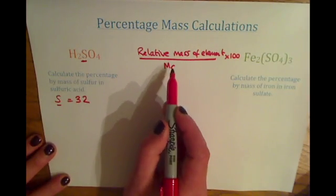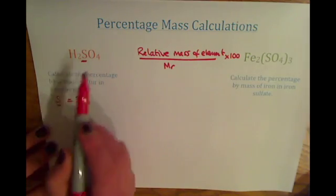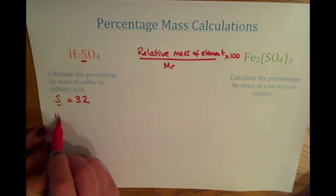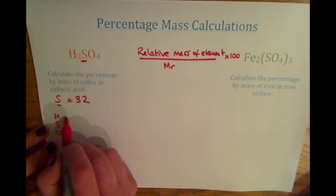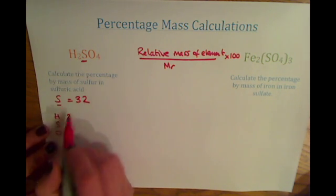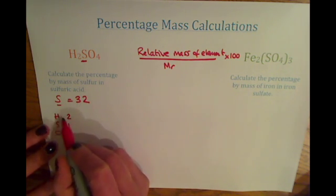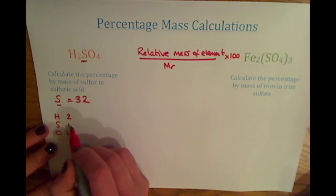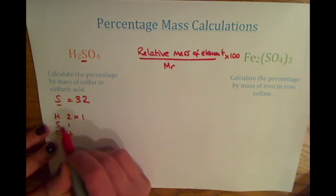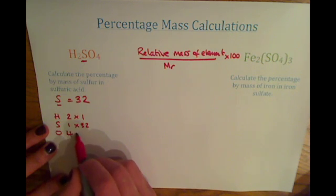Then we need to find the relative formula mass. For the relative formula mass, you need to look at each of the elements in the compound. So we've got H, S, and O — two H's, one S, and four oxygens. Using our periodic table, we find the relative atomic mass of each element: hydrogen is 1, sulfur is 32, and oxygen is 16.